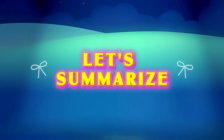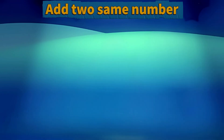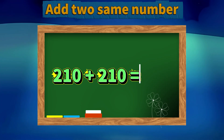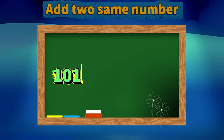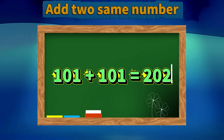Let's summarize. Add two same numbers. 210 plus 210 equals 420. 101 plus 101 equals 202.